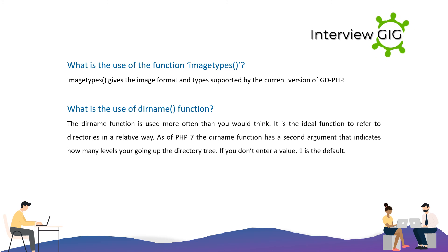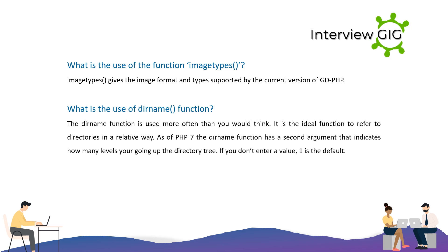What is the use of the dirname() function? The dirname() function is used to refer to directories in a relative way. As of PHP 7, the dirname() function has a second argument that indicates how many levels you're going up the directory tree. If you don't enter a value, 1 is the default.